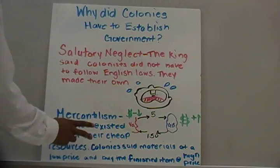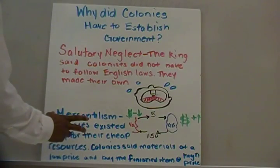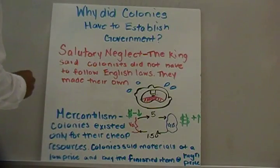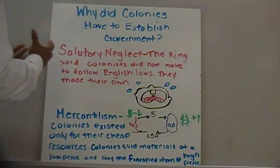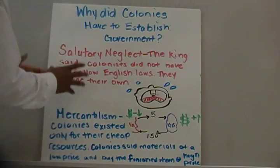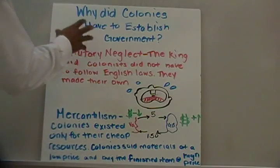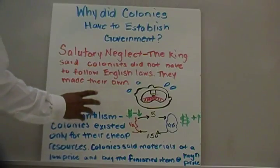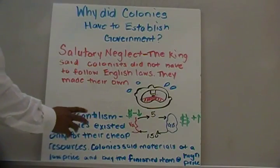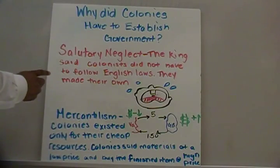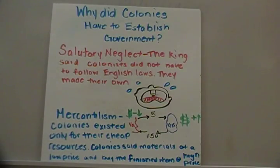In the next video, we're going to look at what happens after these two ideas really affect the colonies — they make their own laws, and they know they only exist as a source of cheap raw materials. That's it for today's video. If you have any questions, we'll look at it in class tomorrow.